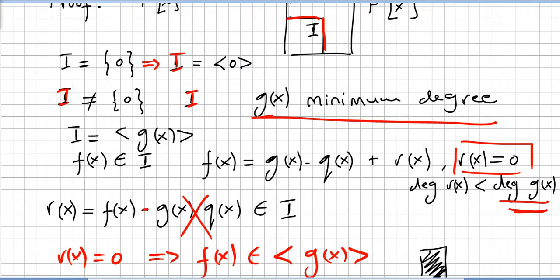If the ideal has some polynomials, we pick g(x), the polynomial with minimum degree in the ideal. Now we have to show that the ideal will be generated by this polynomial of minimum degree, g(x).